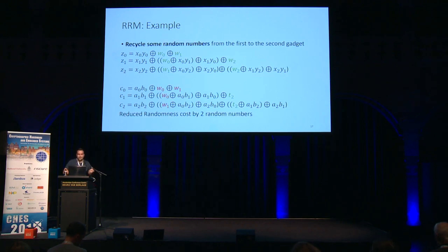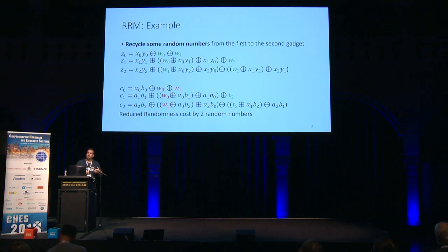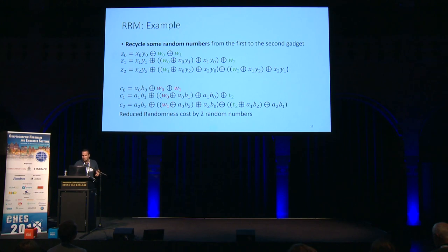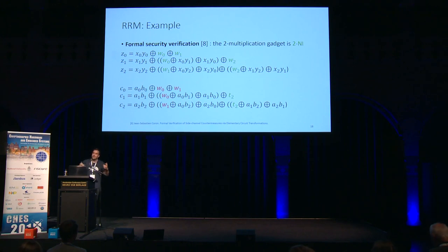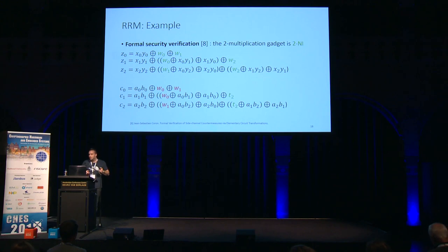So instead of using t0 and t1, we replace them with w0 and w1, which we already generated before, reducing the randomness cost by two numbers. That doesn't seem like a lot, but the AES S-Box has many such multiplications, so it will be beneficial in the long run. The natural question is: is this new two-multiplication gadget secure? Using the formal security tool by Coron, you can actually prove that this two-multiplication gadget is 2NI — non-interferent at second order. So far, so good.